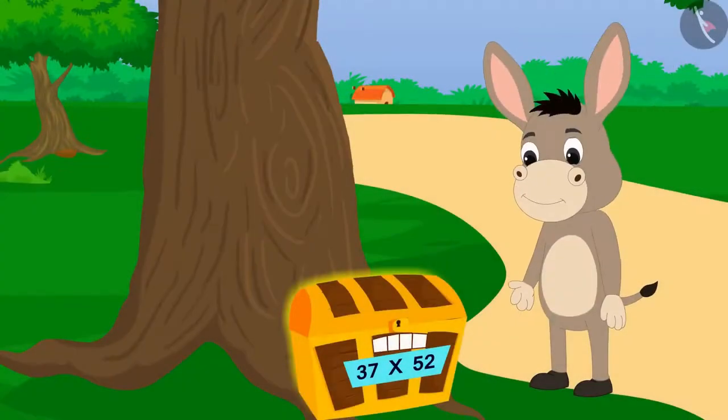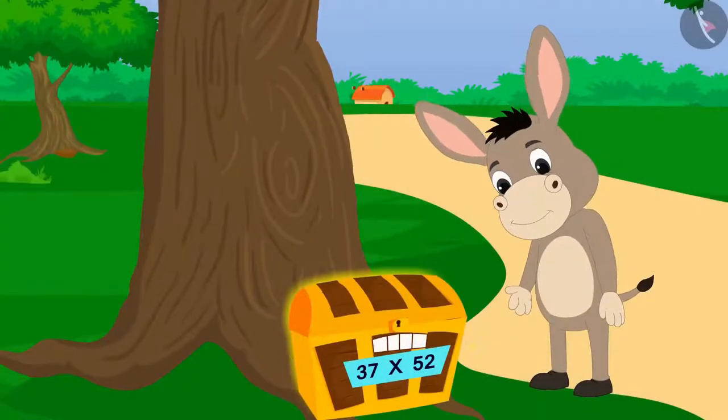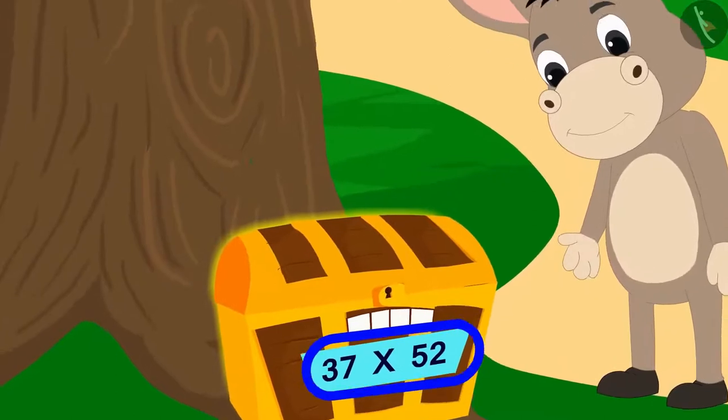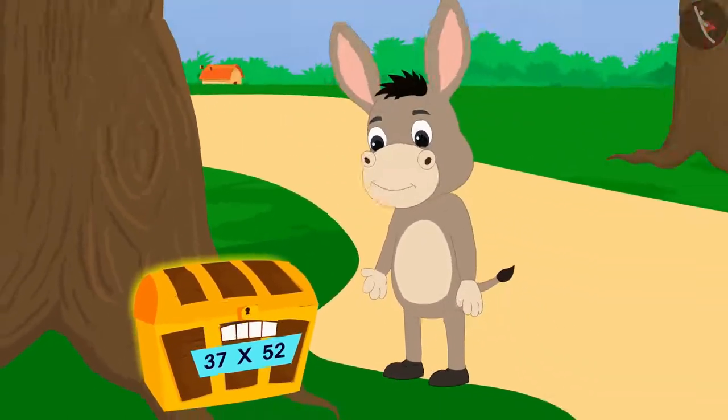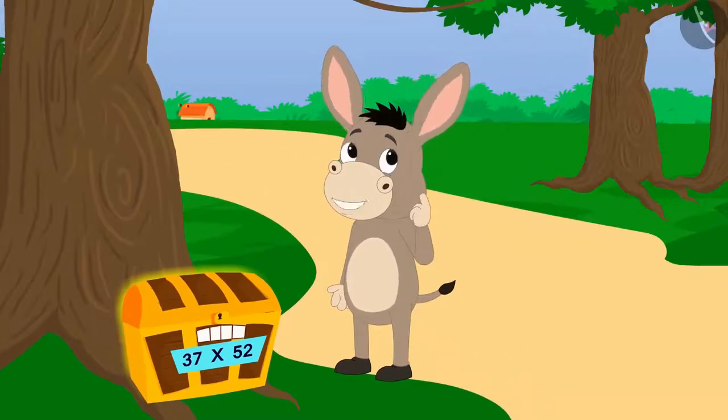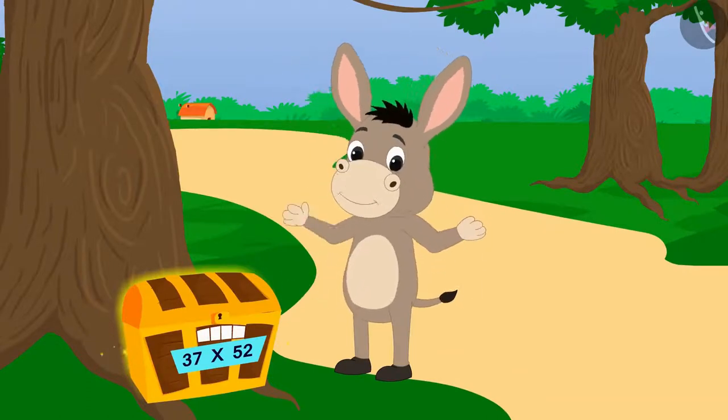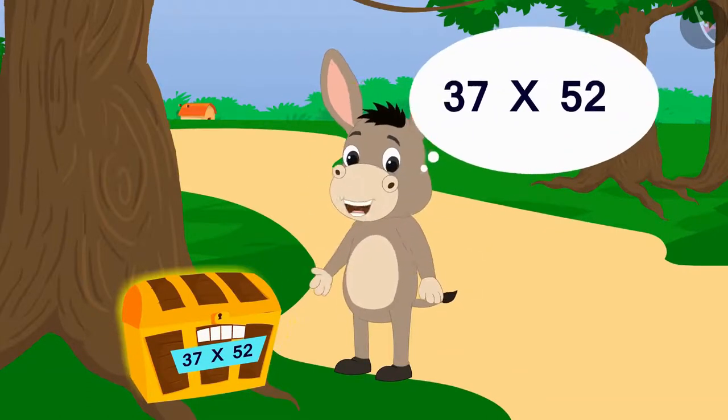Bhola noticed that this multiplication was written under the lock. Well, now I understand the code to open this lock could be 37 times 52.